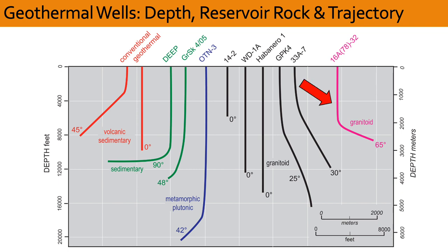It is for this reason that the last well on the far right labeled 16A-78-32 is relevant. This is a recently completed well at the Utah Forge site, and it has a 65 degree deviated leg. It shows that the drilling of sub-horizontal well trajectories in granite is within reach, and with practice lower drilling costs should be achievable.